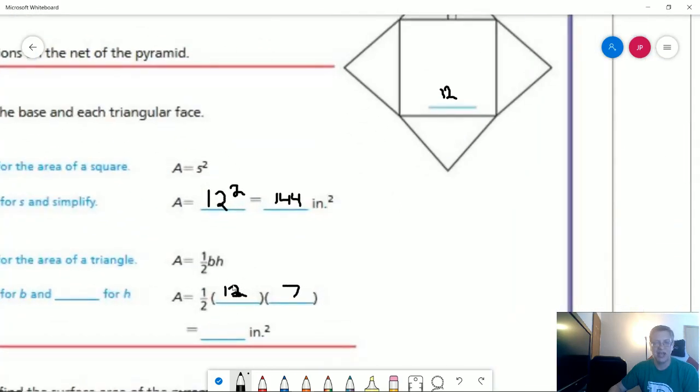I'm going to cut this part in half. So 1 half times 12 is going to give me 6. 6 times 7 is going to give me 42.